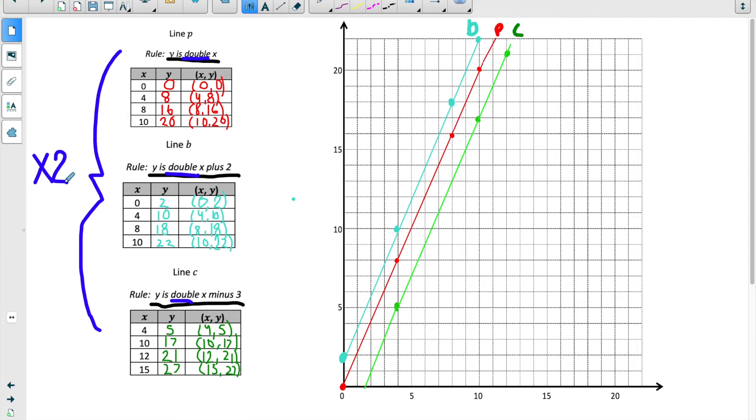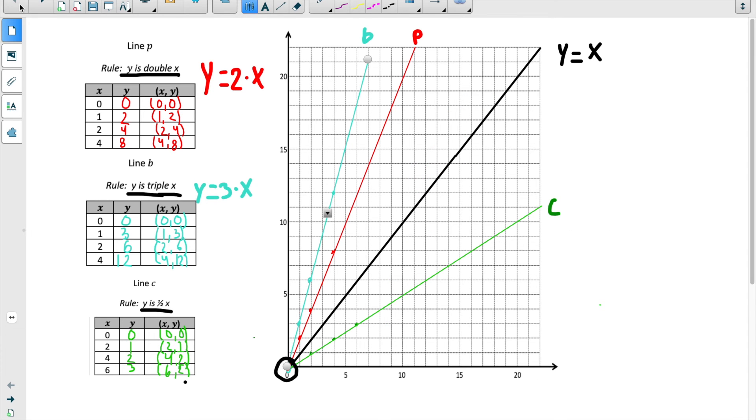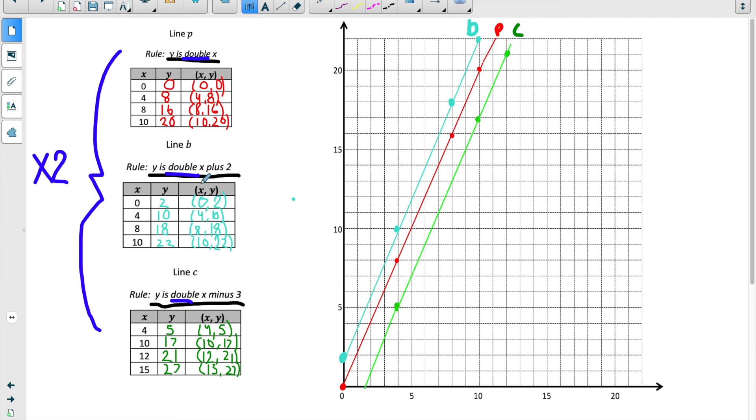That's why the steepness didn't change. If we look back here at this example, we multiplied each line by a different value. So here we multiplied by 2, then by 3. This was by 1, and this was by a half. And that's why they ended up with different steepnesses. But here, they were all doubled. But then if you think about it, we can notice that they're in different positions on the coordinate plane. So B is higher than P, and C is lower than both of them.